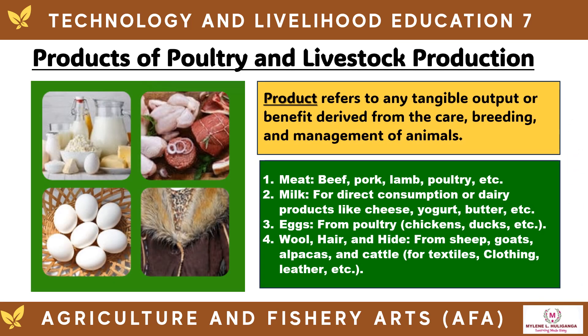A product refers to any tangible output or benefit derived from the care, breeding, and management of animals. Examples of products in livestock production are meat like beef, pork, and lamb; milk for direct consumption or dairy products like cheese, yogurt, and butter; eggs from poultry like chickens and ducks; and wool, hair, and hide from sheep, goats, alpacas, and cattle for textiles, clothing, and leather.